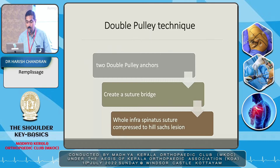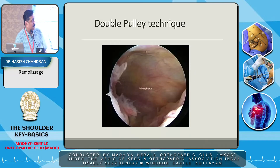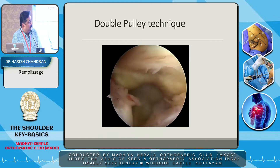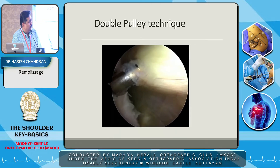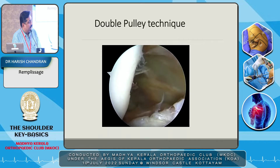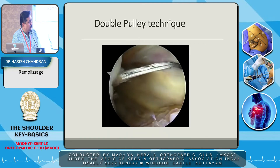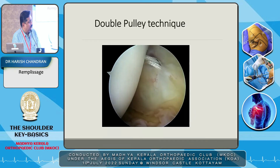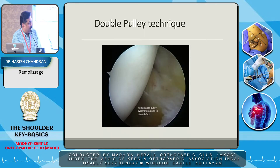There's also a double pulley technique using two double-loaded anchors. A suture bridge is created, going back onto the subacromial space to anchor and stitch it back onto the infraspinatus, compressing the whole infraspinatus onto the Hill-Sachs lesion. Two pilot holes are made — one inferior and one superior — and all the bites are taken from the infraspinatus and anchored on top, closing the defect from the subacromial space.